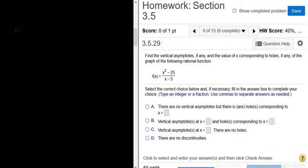We have to find all of the vertical asymptotes and all of the holes of this rational function. So f of x is x squared minus 25 over x minus 5.